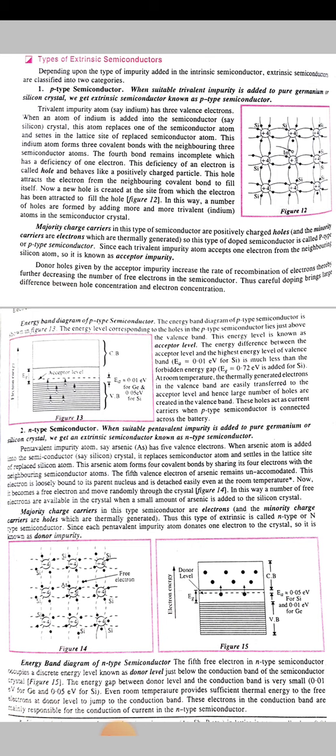Depending upon the type of impurity added in the intrinsic semiconductor, extrinsic semiconductors are classified into two categories. First is p-type semiconductors, and second is n-type semiconductors.